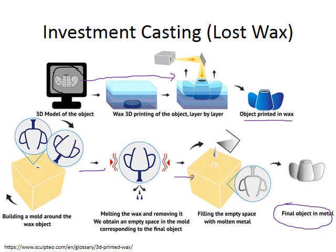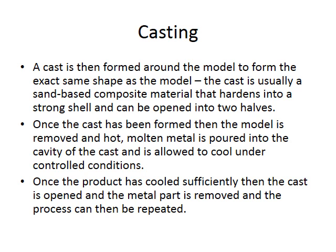As I said, it's a very old technique and it is used in prosthetic manufacturing — it has been used traditionally and still is used for a number of different medical devices. A cast is formed around the model to form the exact same shape. The cast is usually a sand-based composite material that hardens into a strong shell and can be opened in two halves. Once the cast has been formed, the model is removed, hot molten metal is poured into the cavity, and allowed to cool under controlled conditions. Once cooled sufficiently, the cast is opened, the metal part is removed, and the process can then be repeated.